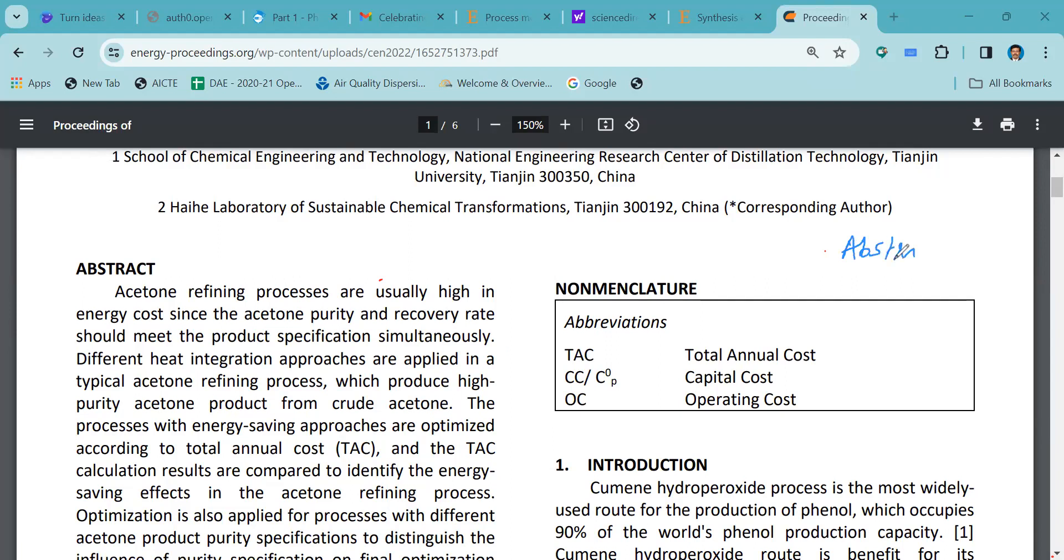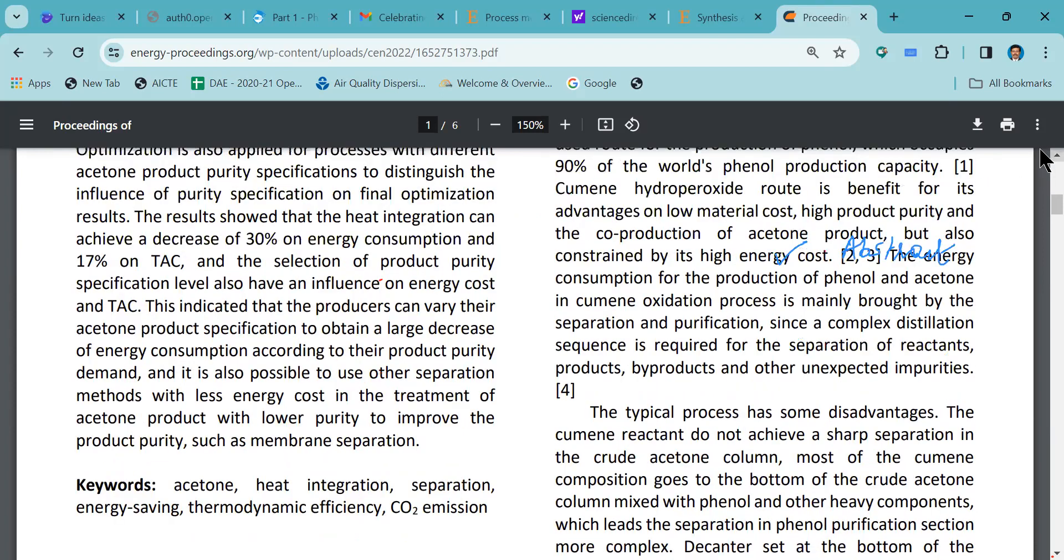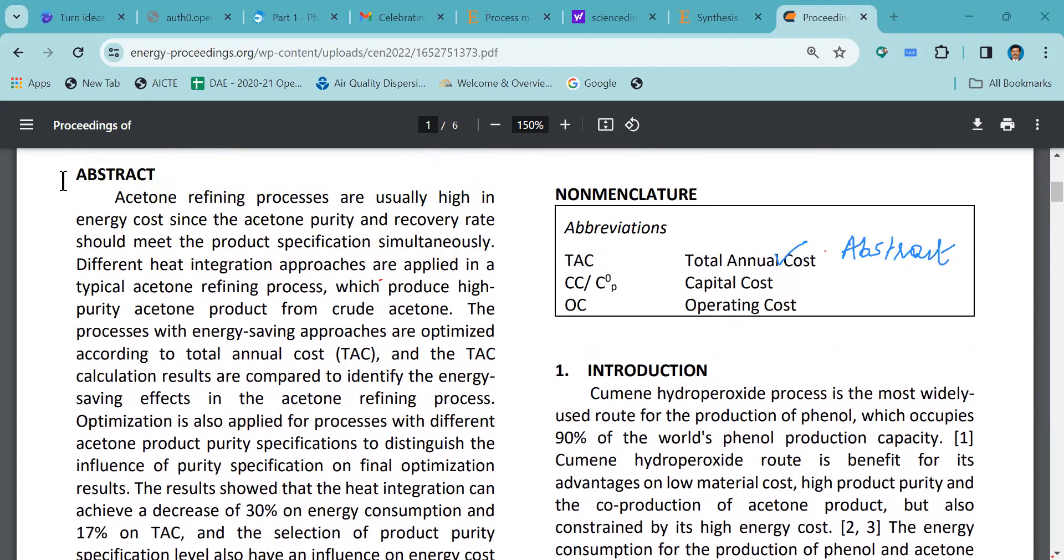In the abstract, generally they will try to express what is the main focus of the work. Later they will give the methodology adopted in obtaining the results. The authors will also try to tell about the expected outcomes of the particular work. So number one, what we have to look at is the abstract.